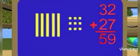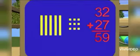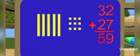You know that we start addition from the right side. So 7 and 2 is 9, and 3 plus 2 is 5. 59.